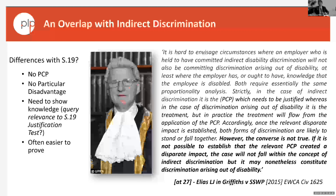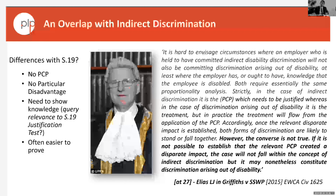For the reasonable adjustments claim, you'd make a similar point as a claimant — the PCP is a requirement to a certain level of attendance at work, and substantial disadvantage would be that that's difficult because you're disabled. The reasonable adjustments would be potentially numerous, and they would feed into whatever the Section 15 justification would be. So these matters and questions overlap. I raise it because of some of the wording from Justice Elias in the case of Griffiths, which flags this overlap.